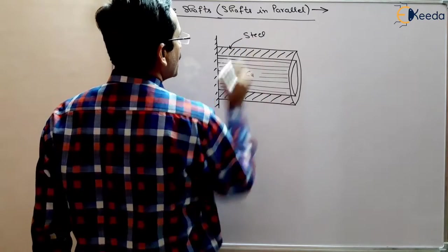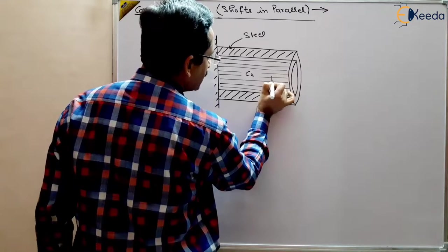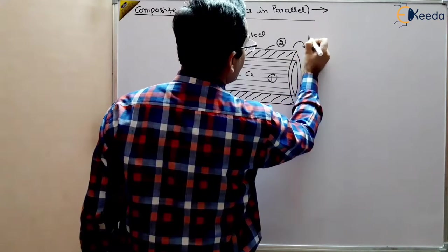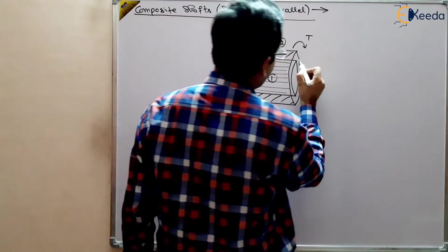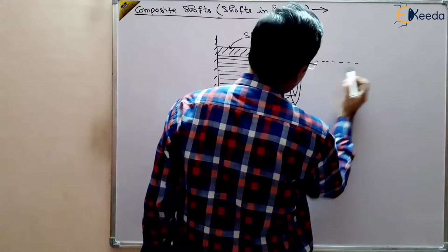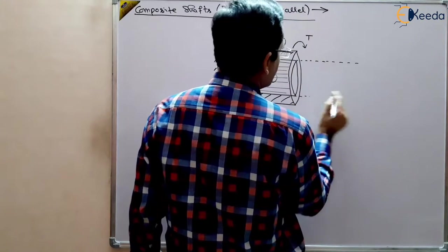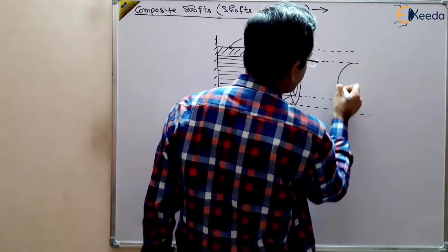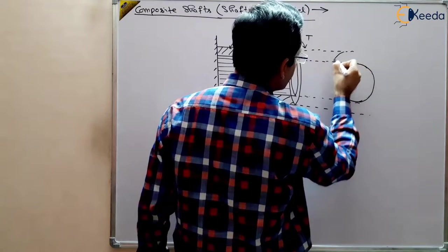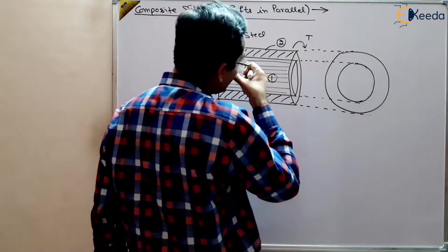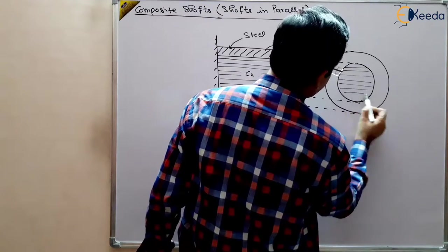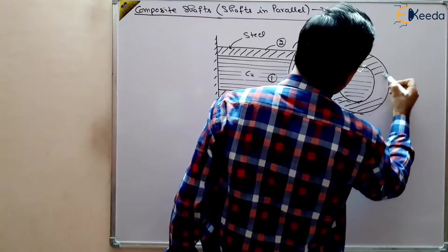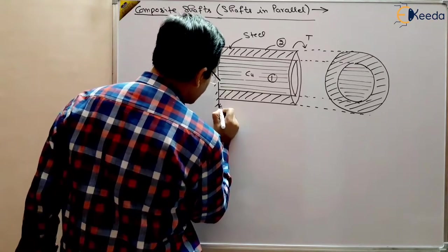Say this is number one and this is number two, and a torque is applied on the shaft. We want to find out the angle of twist and the torque shared by each shaft. Both shafts have the same length.